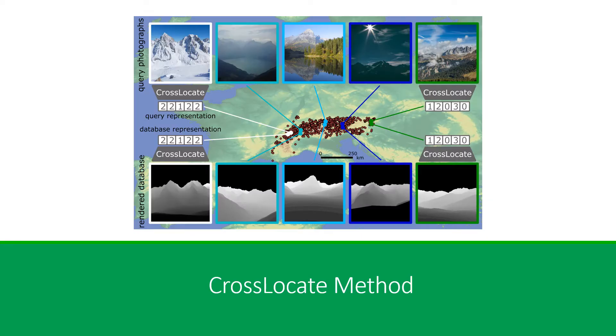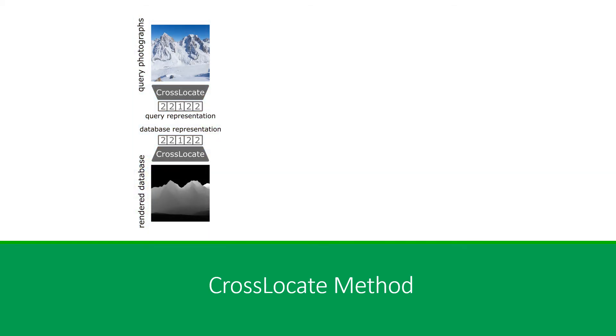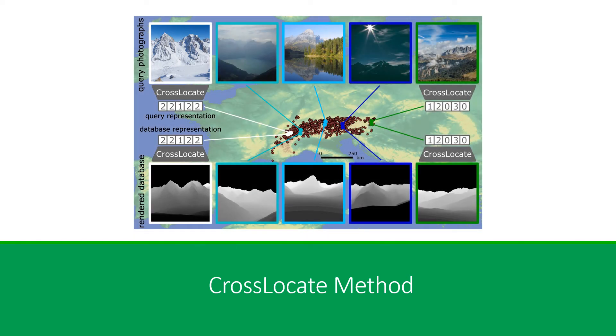We solve the localization task through cross-model image retrieval based on deep global representations. In spite of common expectations, we are able to encode both query photographs and database renders with a single deep model with only a single branch. The database representations are searched for the nearest neighbor of each query representation. The method is rather straightforward, yet efficient and involves crucial modifications within its architecture.